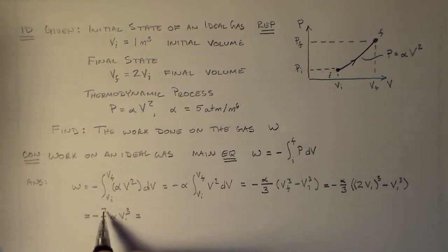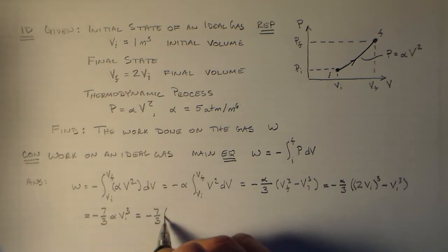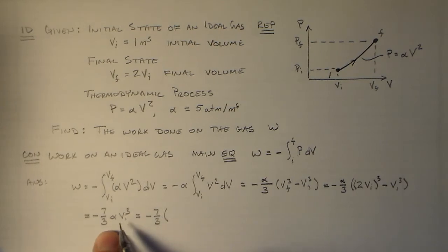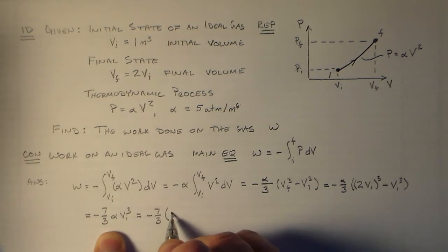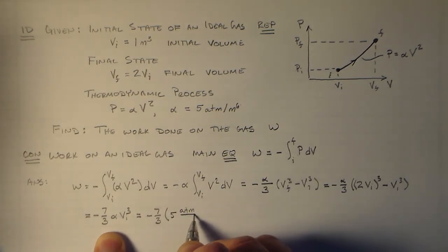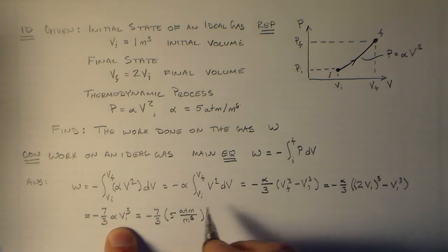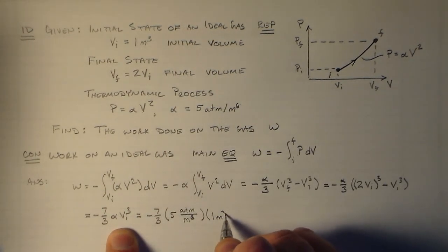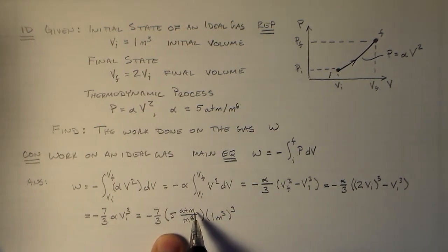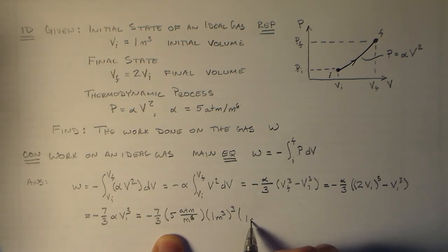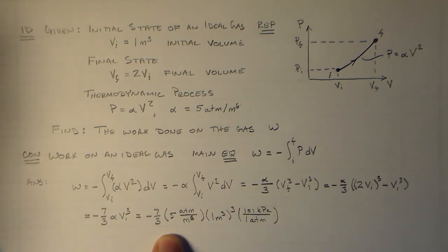And we have with that some constants. So, let's see. This constant is this guy here. It's five atmospheres for every meters to the sixth. And then we have Vi, that's one cubic meter. And that one cubic meter is going to be cubed. And it turns out that this atmospheres is not an SI unit, so we're also going to have to try to convert that. So one atmosphere per 101 kilopascals. That's our conversion from atmospheres to Pascals.